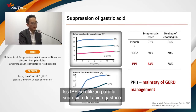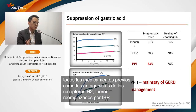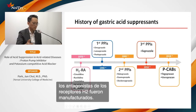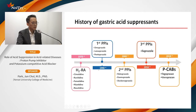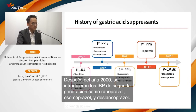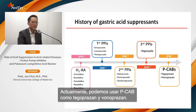Gastric acid suppression is definitively achieved with PPI, which replaced previous drugs like H2 receptor antagonists. The history of acid suppression: in 1970, H2 receptor antagonists were introduced. After 1990, first-generation PPIs — omeprazole, lansoprazole, pantoprazole — were launched. After 2000, second-generation PPIs — rabeprazole, esomeprazole, dexlansoprazole — followed. In 2010, the third-generation PPI ilaprazole launched. Nowadays we can also use PCABs like tegoprazan or vonoprazan.